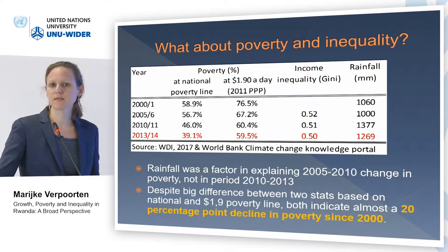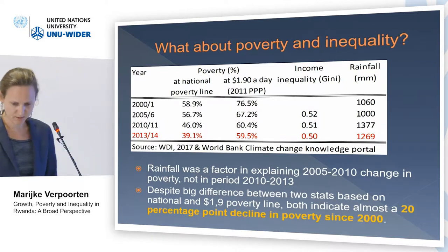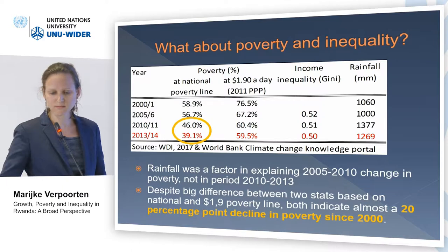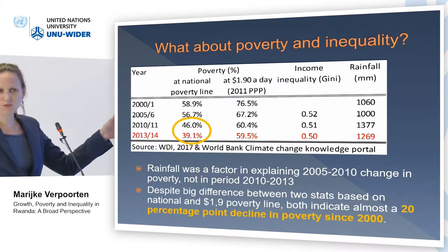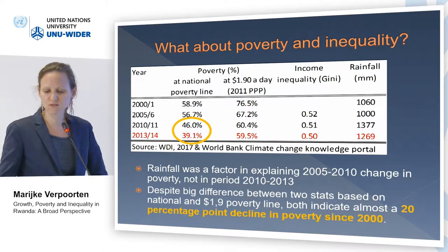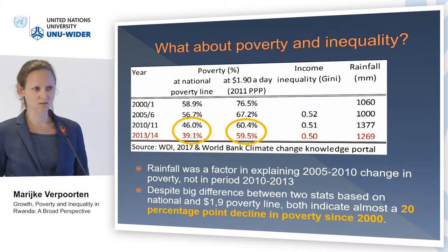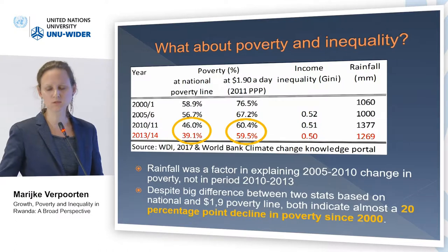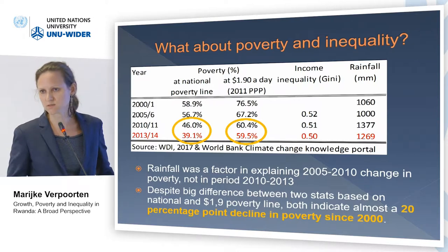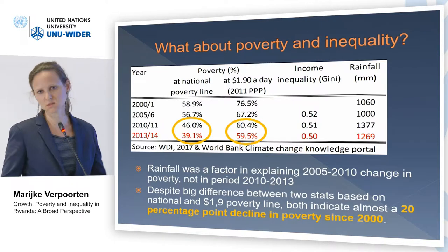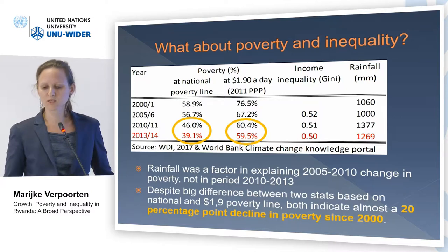Looking at poverty, it all depends on what poverty line we are using. If we use the national poverty line, we see that across the two latest integrated household surveys of 2010 and 2013, poverty declined by six percentage points. If instead we use the international poverty line of one point nine dollars — which is higher than the national poverty line — we find that poverty remained almost constant across that period.